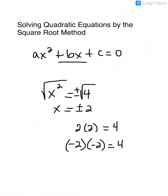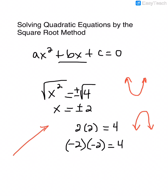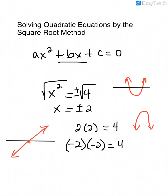Whenever we're solving quadratic equations, the graph of a quadratic equation is a parabola — it looks like a U, opening up or down. When solving linear equations, our solution is where the line crosses the x-axis, which is only one point. But quadratic equations can have two solutions — the two points where the parabola crosses the x-axis.